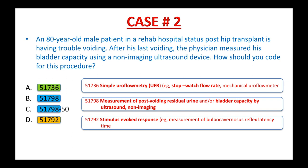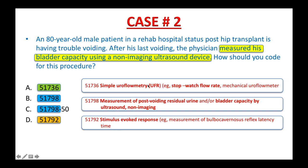An 80-year-old male patient in a rehab hospital, status post-hip transplant, is having trouble voiding. After his last voiding, the physician measured his bladder capacity using a non-imaging ultrasound device. How should you code for this procedure? You already highlighted the difference between each CPT code and the key elements in the procedure report. I will give you 15 seconds to tell me which code correctly describes this procedure.